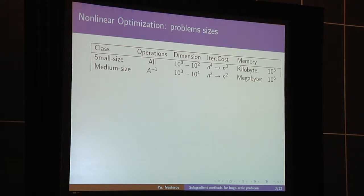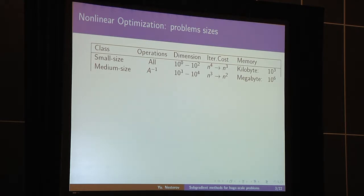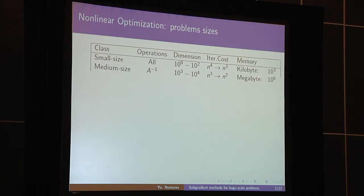Let us start by speaking about the sizes of optimization problems — some classification, just to understand what we are speaking about. Initially, optimization algorithms were developed for problems of small and medium size. For small problems, at each iteration we were more or less free in the operations we would like to do — for example, finding the inscribing ellipsoid of some localization set. Typically, the complexity of such iterations was growing as the fourth power of the dimension. For medium-size problems, we were still able to invert matrices, meaning N-cubed operations per iteration, but the most efficient algorithms should have N-squared dependence.